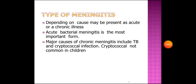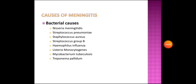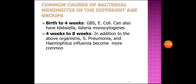Major causes of chronic meningitis include TB and cryptococcal infection, though cryptococcal infection is not common in children. The bacterial causes of meningitis include Neisseria meningitidis, Streptococcus pneumoniae, Staphylococcus aureus, Group B Streptococcus, Haemophilus influenzae, Listeria monocytogenes, Mycobacterium tuberculosis, and Treponema pallidum.